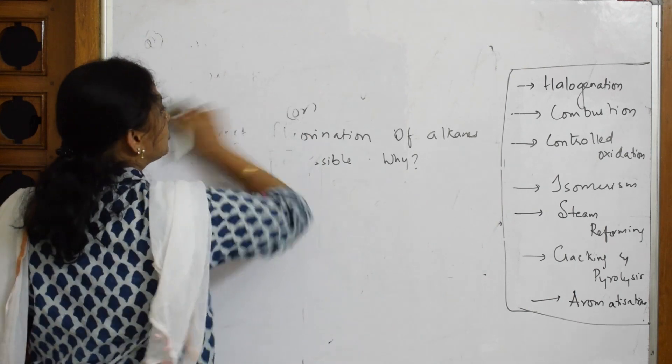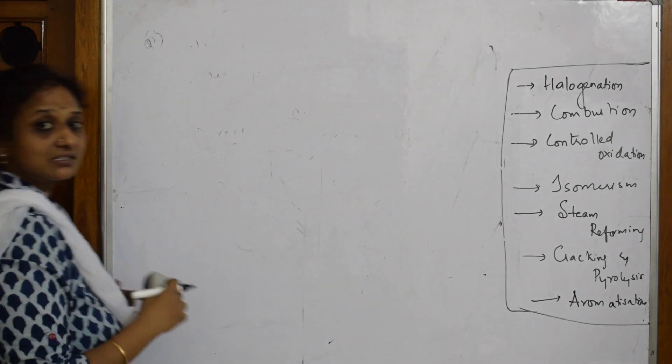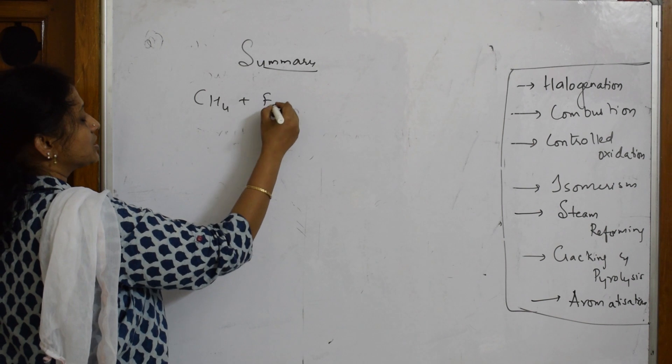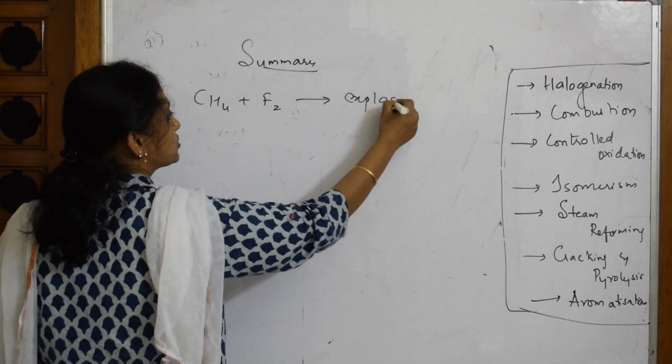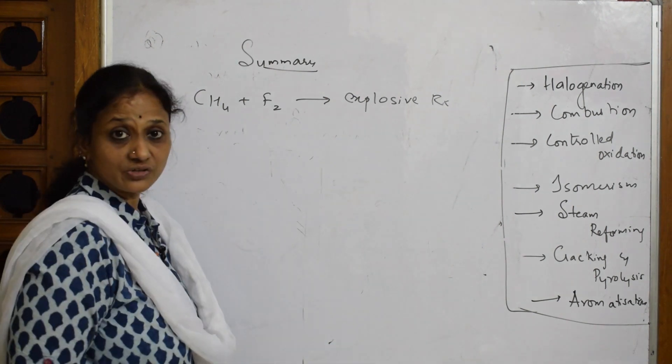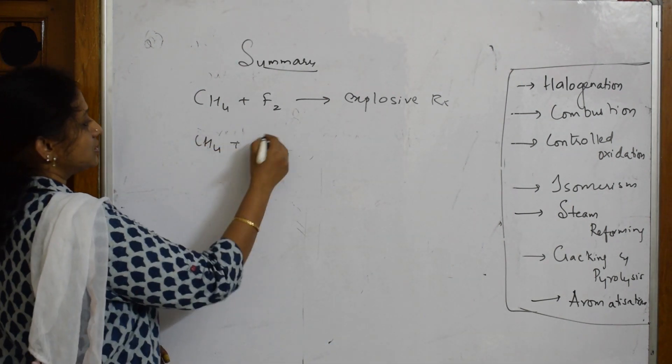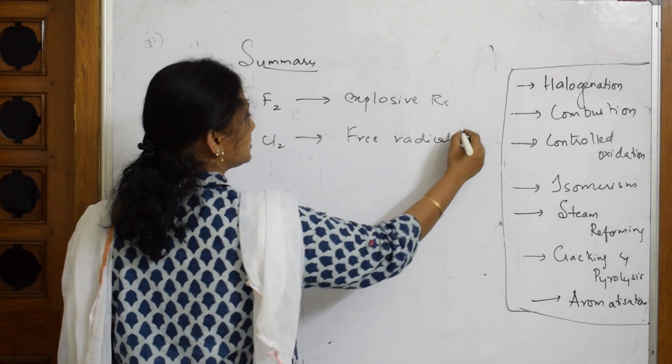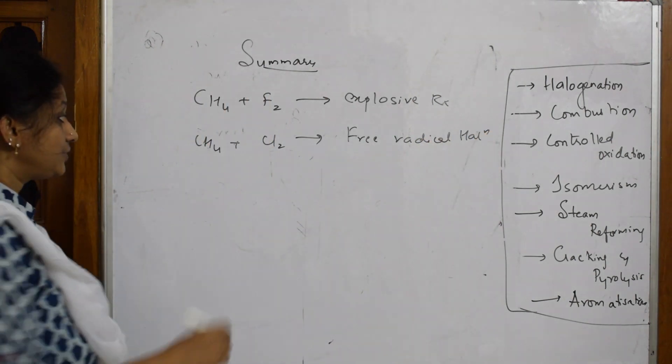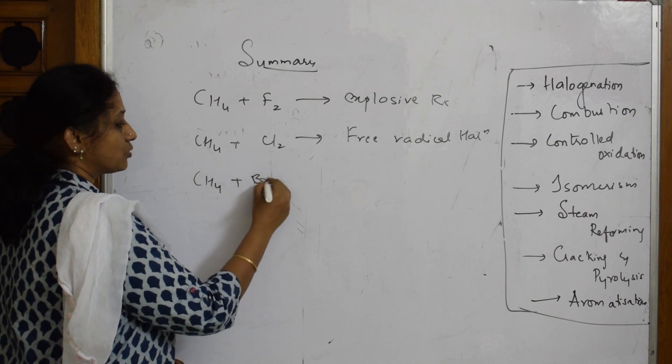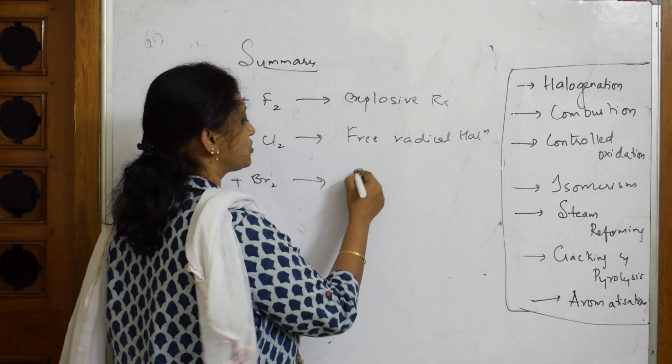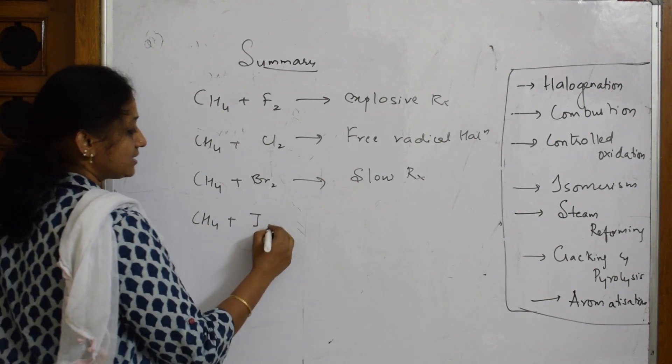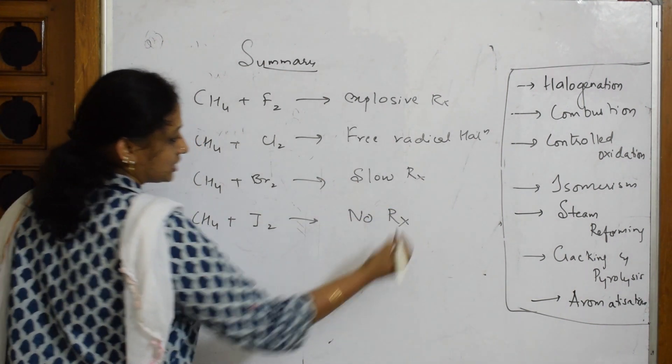Let's see what is a conclusion for all this. Fluorination with methane. Let us summarize the halogenation reactions. Summary: methane plus fluorine is an explosive reaction. Methane plus chlorine undergoes free radical mechanism or free radical halogenation. When I take methane plus bromine, it is also free radical but very slow reactions compared to chlorine.